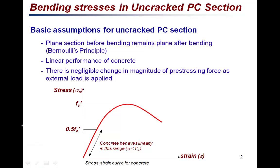This means the strain will be linear in the beam. Another assumption is that during serviceability load conditions the concrete will behave linearly — this is valid because the concrete will be within the range of 0.5 f'c, where it still behaves linearly. The final assumption is that due to external loads there will not be any change in the magnitude of the prestressing force; in other words, the prestressing force in the tendons is not affected by the external load.